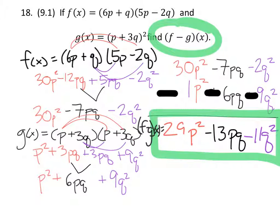As you can see there, f minus g of x equals 29p squared minus 13pq minus 11q squared. Thanks for watching this video, I hope it's been helpful.